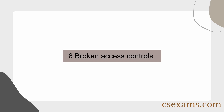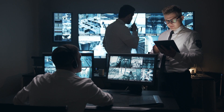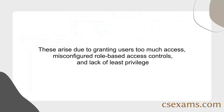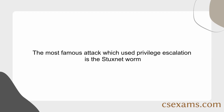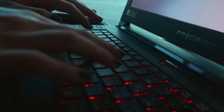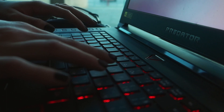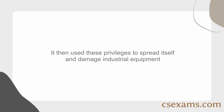Number 6: Broken access controls. These arise due to granting users too much access, misconfigured role-based access controls, and lack of least privilege. The most famous attack using privilege escalation is the Stuxnet worm, which exploited a flaw in the Windows operating system to gain elevated privileges, then used those privileges to spread itself and damage industrial equipment.